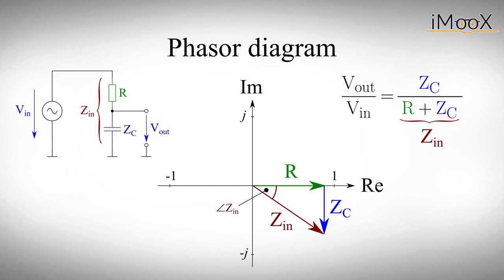With the phasor diagram we can also calculate the sum of the real impedance of the resistor R and the imaginary impedance of the capacitor Zc. We simply have to add both vectors graphically. The result is the vector Zin, which has a length as well as an angle. This impedance Zin is of course proportional to the input voltage.